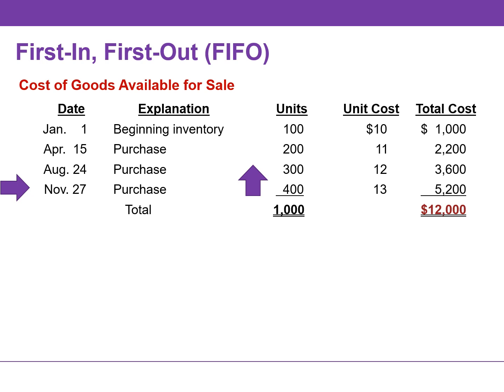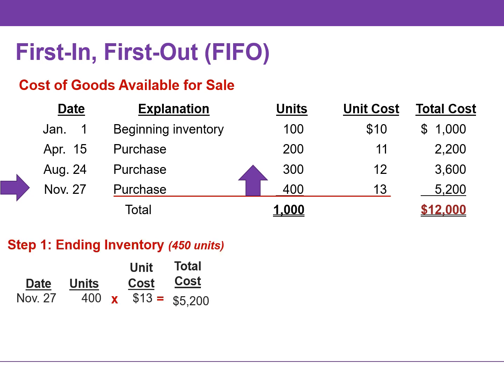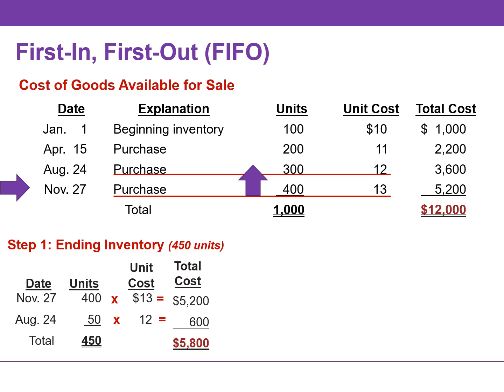We're going to start with the most recent purchase. In this example, it's 400 units at $13 on November 27th. The remaining 50 units are priced using the unit cost of the second most recent purchase, which is $12 on August 24th. So we assign 400 units the unit cost of $13 and the remaining 50 units the unit cost of $12 to arrive at our ending inventory of $5,800.